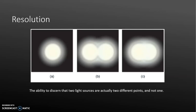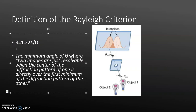Now that we know that diffraction — light traveling as a wave — can be bent through an opening and produce a diffraction pattern, and we know that resolution is our ability to discern that there are two light sources, we can now discuss the Reilly Criterion. The equation theta equals 1.22 times the wavelength divided by the diameter is what we use to determine if the Reilly Criterion is met. That criterion is the minimum angle theta where two images are just resolvable when the center of the diffraction pattern of one is directly over the first minimum of the diffraction pattern of the other.